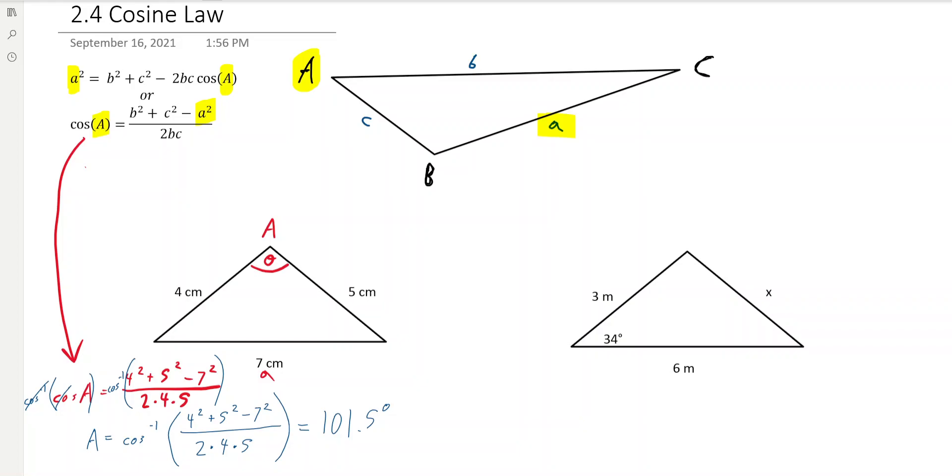All right. For this question, what we're going to do is make sure that we're labeling the side that we're looking for as A, and the angle that we have as capital A. Now what could happen here is you could be given a different angle or a different side or something, in which case you have to be very careful that you're doing it correctly. But in this case, these two side and angle are related. And so what we're looking for is A. We're going to write the formula from above, that's this one over here.